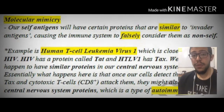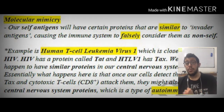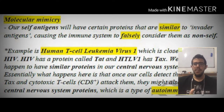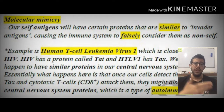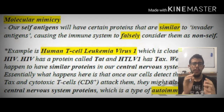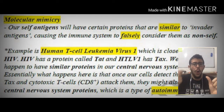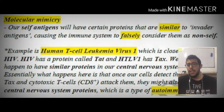Now, molecular mimicry is one of the more interesting ways that can cause autoimmune diseases. Simply put, we have certain self-antigens that have proteins similar to invader antigens. So let's imagine we have a protein present within our body, and we have already induced a response against a viral or bacterial antigen that is extremely similar to the one present inside the body. What happens is that our own body induces an immune response against our own cells for the sole reason that they are extremely similar.